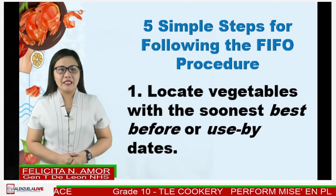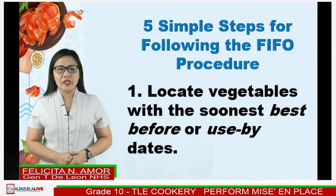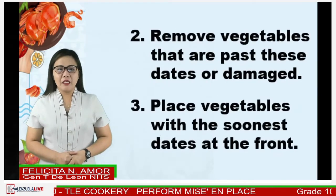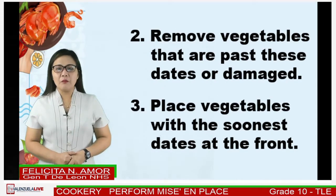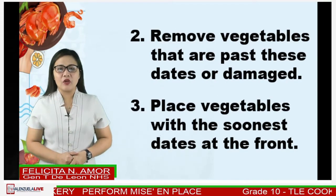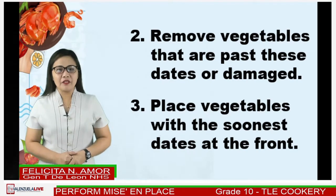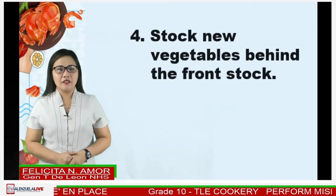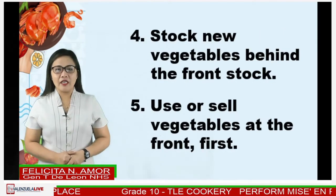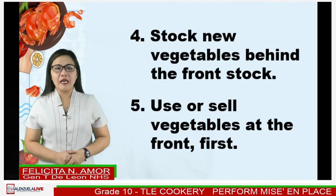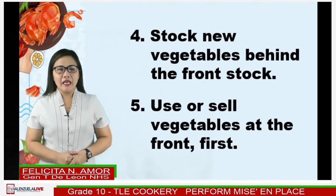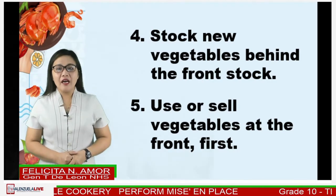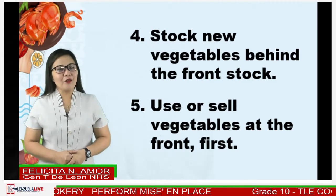1. Locate vegetables with the soonest best before or use-by dates. 2. Remove vegetables that are past these dates or damaged. 3. Place vegetables with the soonest dates at the front. 4. Stock new vegetables behind the front stock. 5. Use or sell vegetables at the front first.